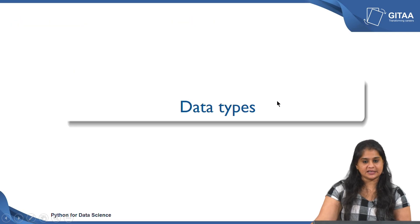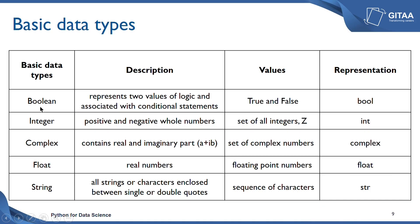Now let us look at the commonly used data types in Python. The basic data types are: Boolean, which represents two values of logic and is associated with a conditional statement — the output is true or false and it is represented as bool. The next data type is integer, which consists of all positive or negative whole numbers, represented as int. The next data type is complex, which contains a real and imaginary part — any expression of the form a + ib is a complex data type, represented as complex.